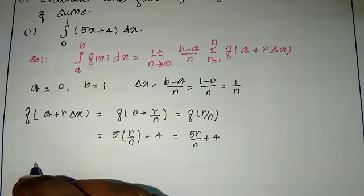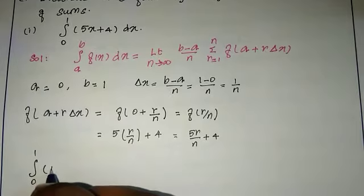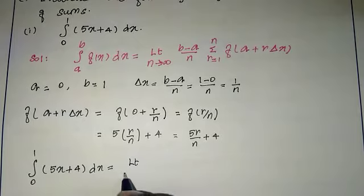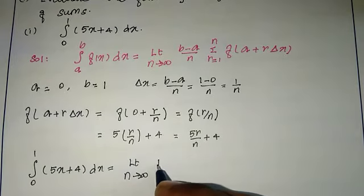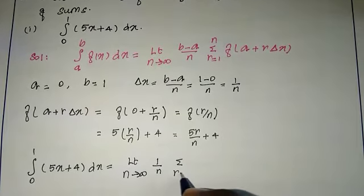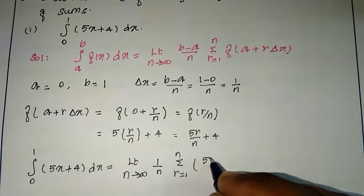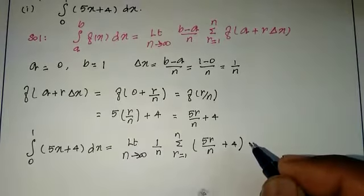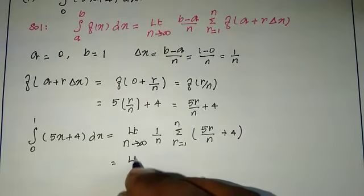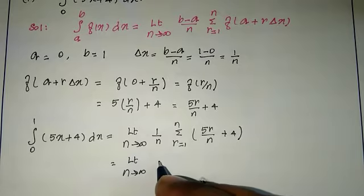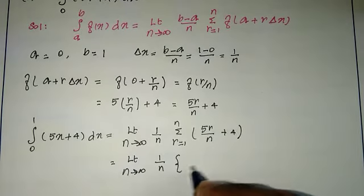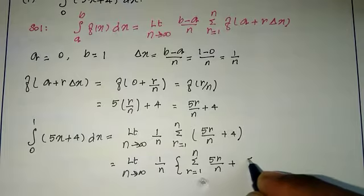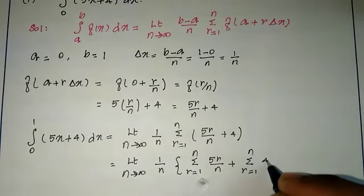Substituting into the limit formula, integral 0 to 1 of (5x + 4) dx equals limit n tends to infinity of (1/n) times summation r equal to 1 to n of (5r/n + 4). Splitting the summation: limit n tends to infinity of (1/n) times [summation r equal to 1 to n of (5r/n) plus summation r equal to 1 to n of 4].